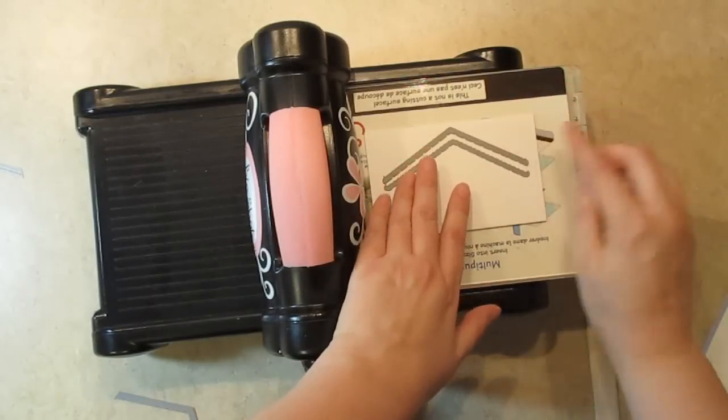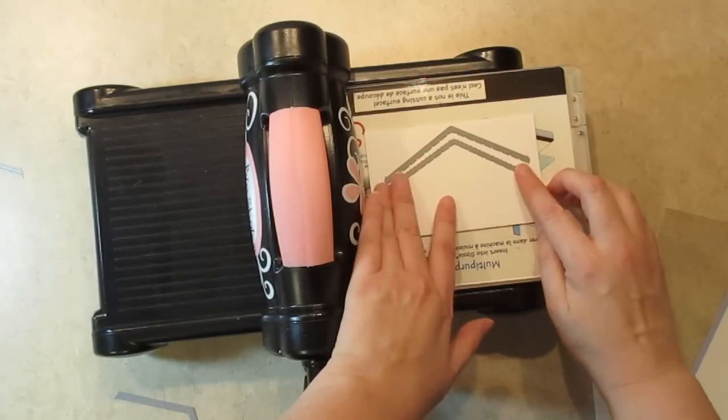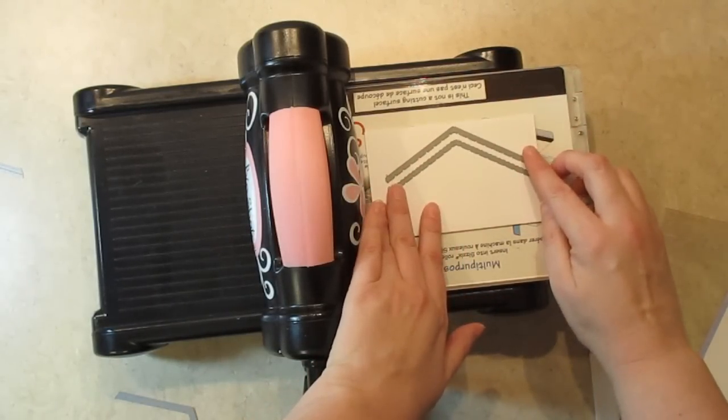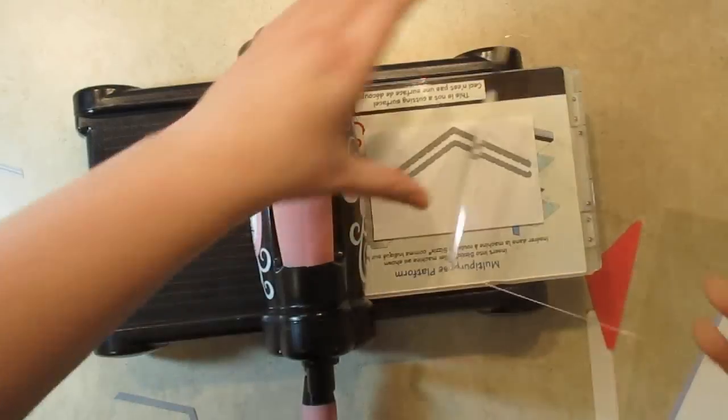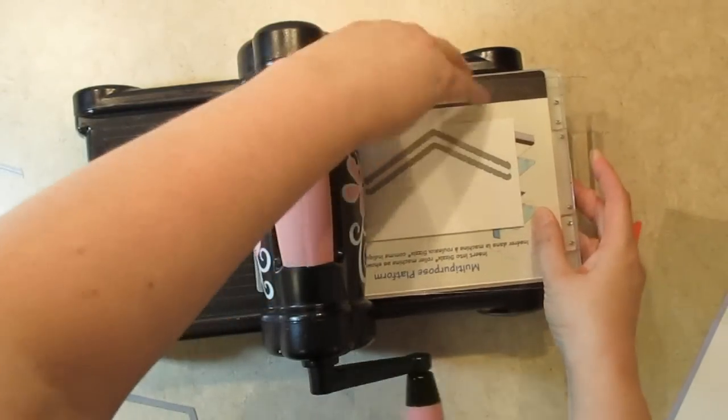I'm going to position them face down on the paper. And again washi tape might be handy in this step but my cutting plates were very flat so I could position it fairly easily.